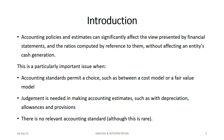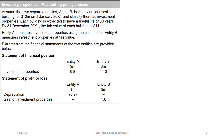Now we'll do some questions. The first demonstrates how accounting policy choices impact figures. There are two entities, A and B, both holding investment property classified under IAS 40. Both buildings have a cost of 10 million with an expected useful life of 50 years and a fair value of 11 million — everything is identical except the policy: Entity A uses the cost model and Entity B uses the fair value model.